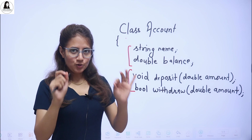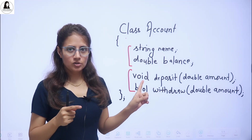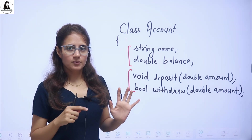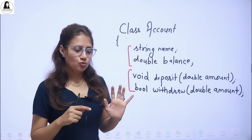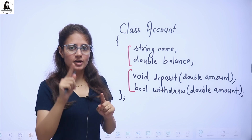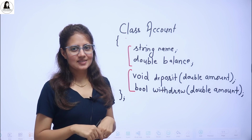I hope you understood how to create objects in a class and how to access attributes and methods using the dot operator and arrow operator, and how to debug to see what is happening behind the scenes. In the next video, we will see a coding exercise based on this, and then move on to the next concept. That's it for this video — see you in the next one. Bye-bye, take care.